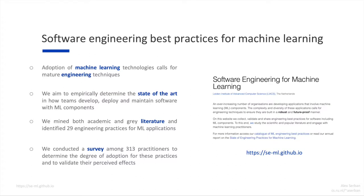We all observed the recent interest in machine learning both from academia and from industry, and we know that the adoption of machine learning technologies calls for mature engineering techniques to ensure these are built in a robust and future-proof manner. In this study we aim to empirically determine the state of the art on how teams develop, deploy and maintain software with machine learning components, with the ultimate goal of helping practitioners — both newcomers and those with experience — to learn from each other and accelerate the overall maturity of the field. We also encourage sharing lessons learned and avoiding common pitfalls between teams, and ultimately aim to provide a quality benchmark for software with machine learning components.